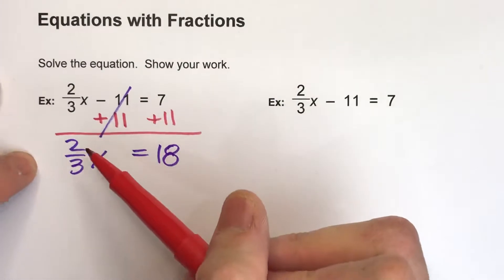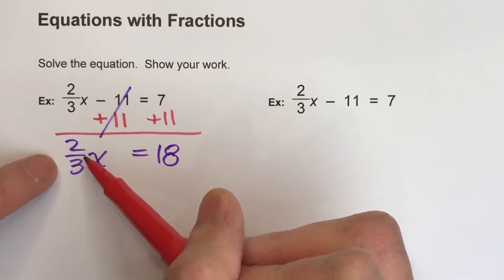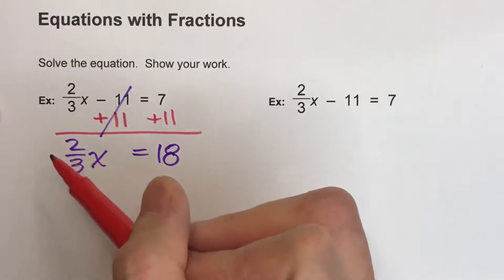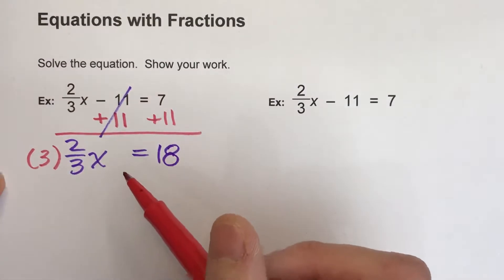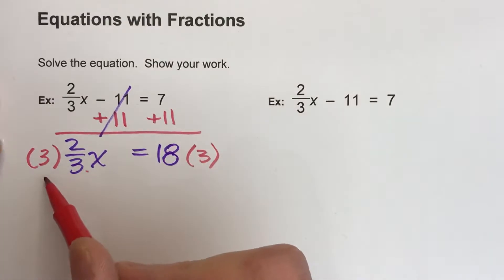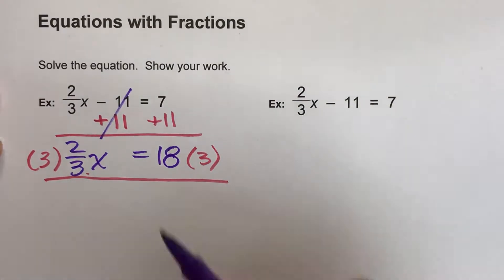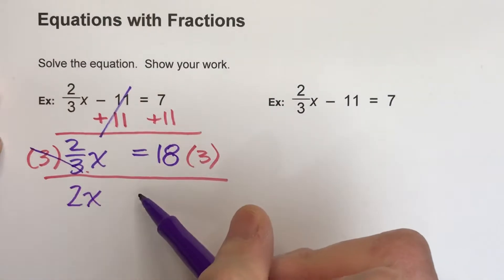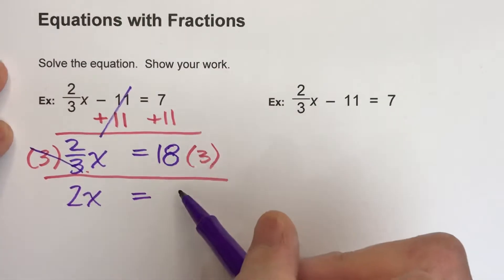Now for this fraction, you can think of this as 2 divided by 3. So to undo the dividing by 3, I'm going to multiply by 3. But what I do to one side, I have to do to the other side. When I do that, the 3s undo each other. I'm left with 2 times x. On the other side, I have 54.